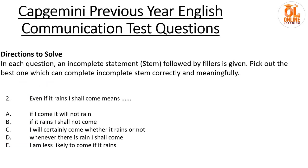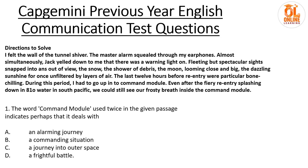Next sentence: 'Even if it rains, I shall come.' The keyword is 'even if it rains.' Options: if I come, it will not rain — obviously not the answer. If it rains, I shall not come — wrong. I will certainly come whether it rains or not — this is the answer. Whenever there is rain, I shall come — wrong. I am less likely to come — definitely wrong. So the answer is option C. 'Even if it rains' means whatever happens, I will certainly and definitely come, whether it rains or not. It doesn't matter.